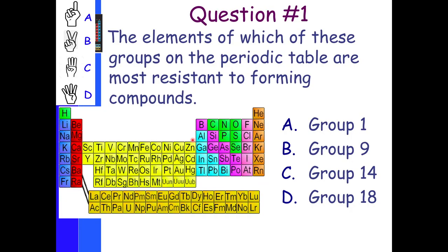So more on this later. But right now we're just going to do a couple practice questions. The elements of which of these groups on the periodic table are the most resistant to forming compounds? It would be group 18. Group 18 is the noble gases, so they do not bond. They do not react. So these are the least reactive ones.